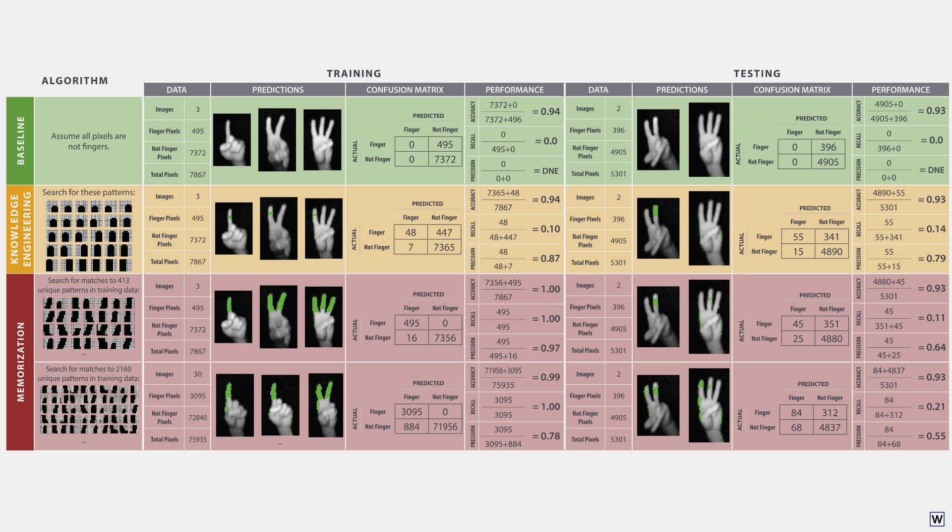From this perspective, it becomes much more clear why our memorization strategy performs so poorly. It's ridiculous to assume that all fingers should look like the ones we've seen in our tiny, tiny, tiny sample. Now that we've gained some deeper perspective into our problem, we can now ask some better questions and hopefully find some better approaches to machine learning.